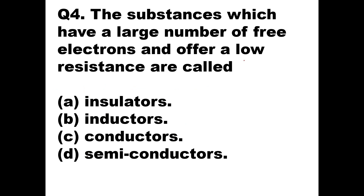Question 4: The substances which have a large number of free electrons and offer a low resistance are called — ? As I have told you, substances with a large number of free electrons allow electric current to flow very easily, so the opposition to the flow of current is also low. Those substances are called conductors. Option C is the right answer.